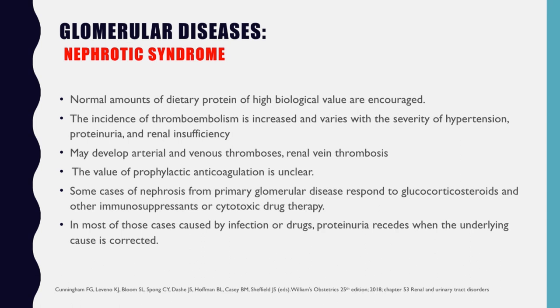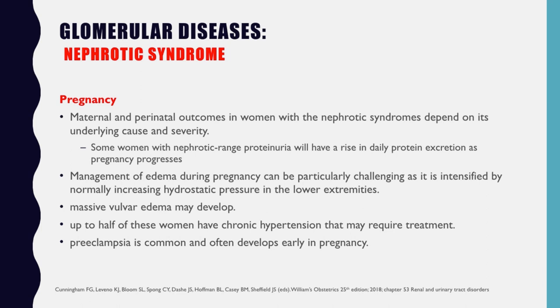Normal amounts of dietary protein of high biological value are encouraged. The incidence of thromboembolism is increased and varies with the severity of hypertension, proteinuria, and renal insufficiency. Nephrotic syndrome may cause arterial and venous thrombosis and renal vein thrombosis, though the value of prophylactic anticoagulation is still unclear. Some cases from primary glomerular disease respond to glucocorticoids and other immunosuppressants or cytotoxic drug therapy. In most cases caused by infection or drugs, proteinuria recedes when the underlying cause is corrected.